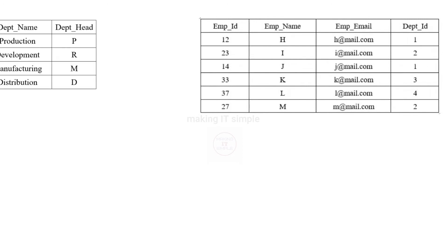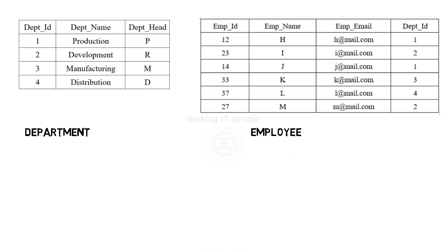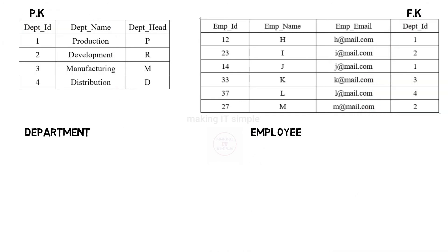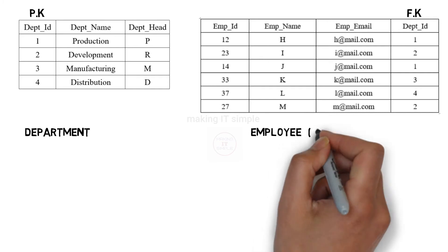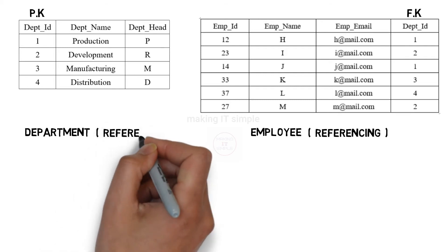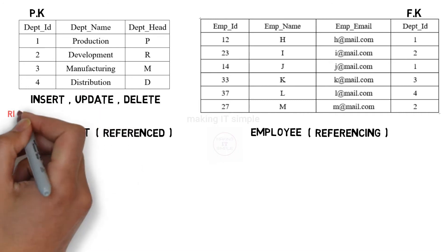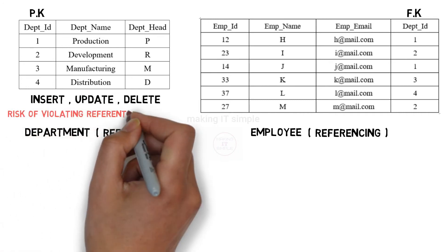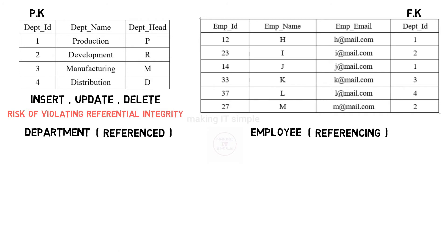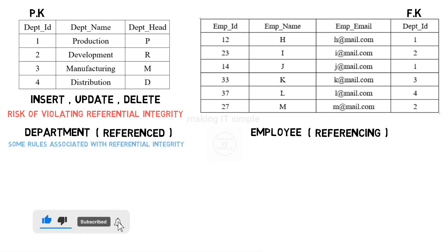Let us understand with an example. There are two tables: department table and employee table. The employee table has a foreign key referencing the primary key of the department table, therefore this table is called the referencing table, and the department table whose primary key is referenced is called the reference table. When we insert, update, or delete data from the reference table, there is a risk of violating referential integrity — the consistency may be lost. For such cases, there are some rules associated with referential integrity.